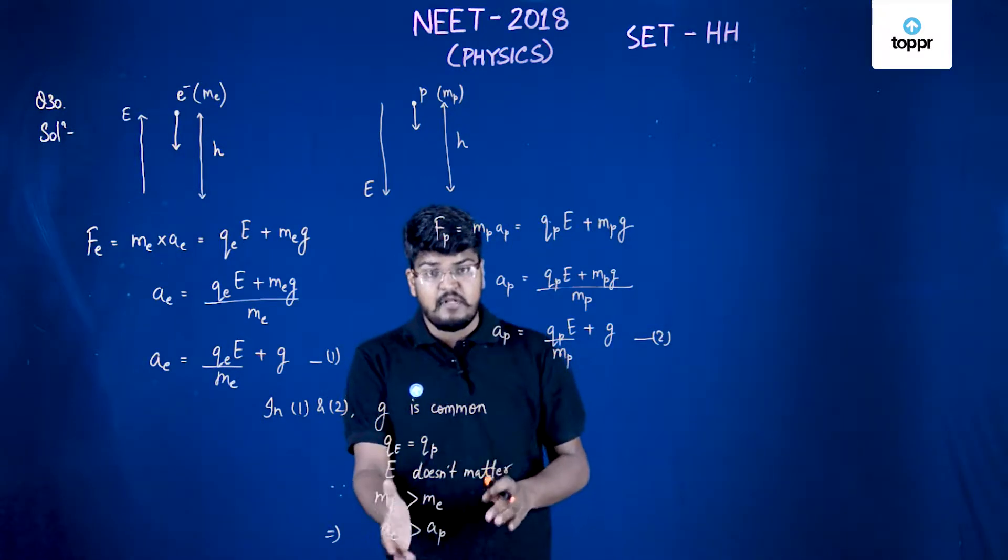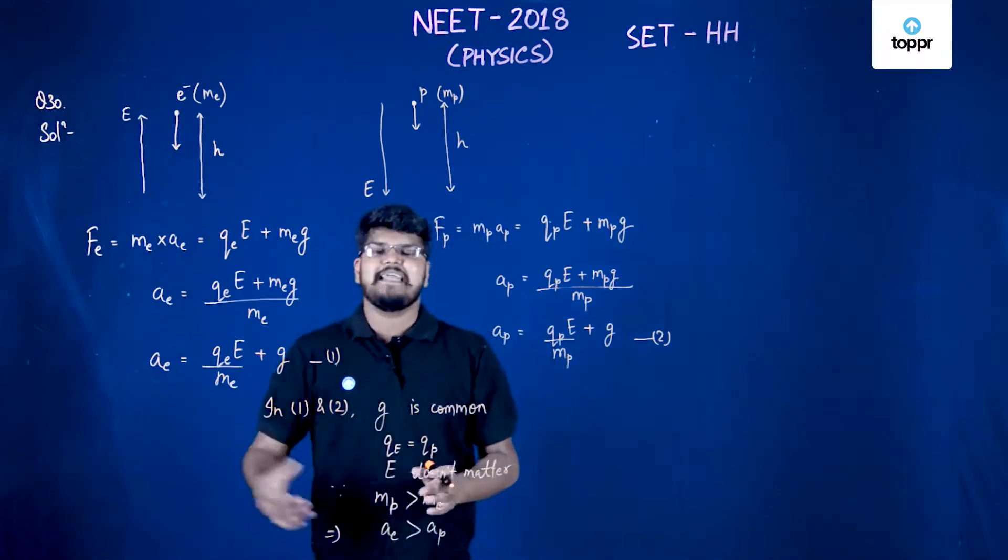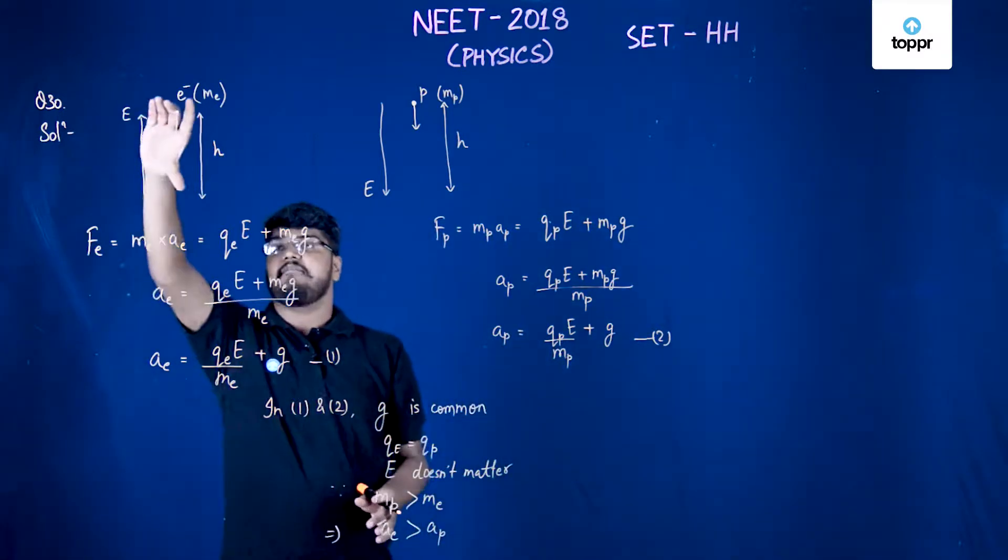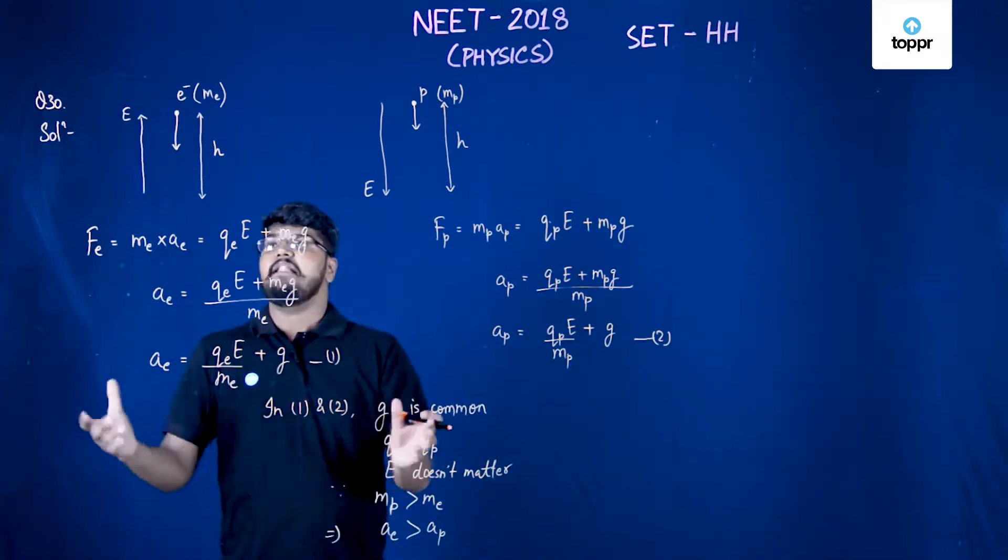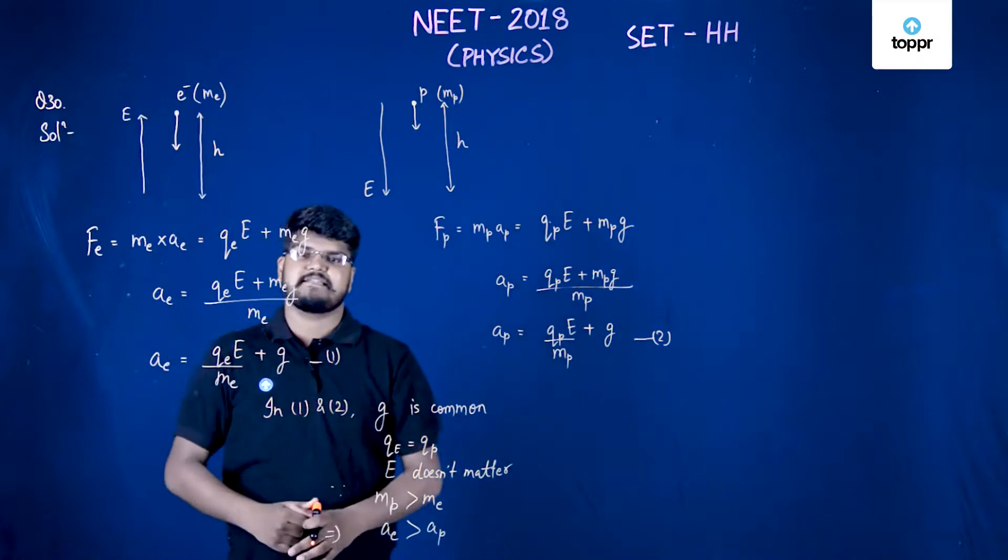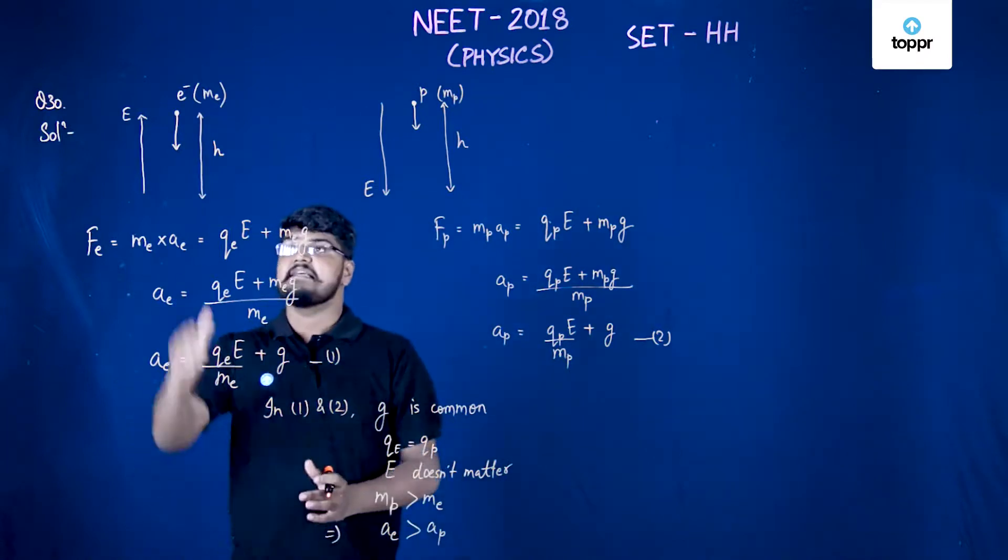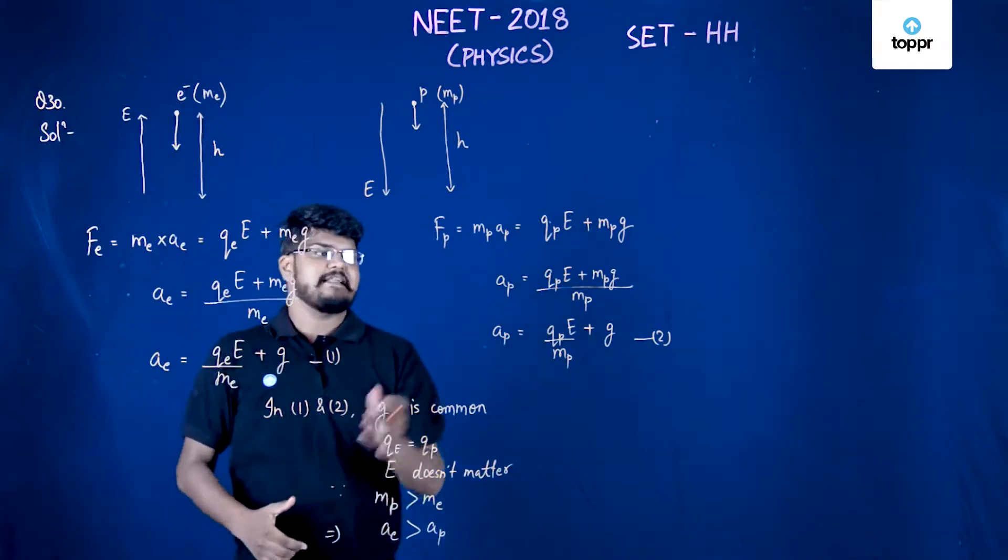This means that the electron will take less time in falling through this vertical distance. So the answer is: the electron will take less time than the proton.